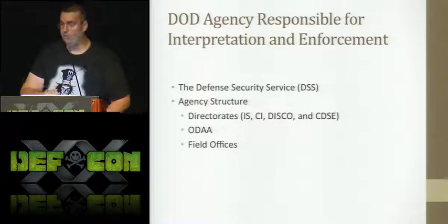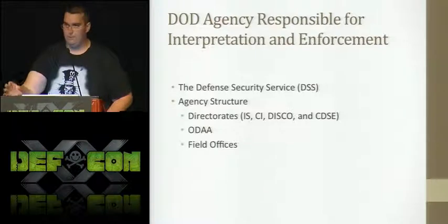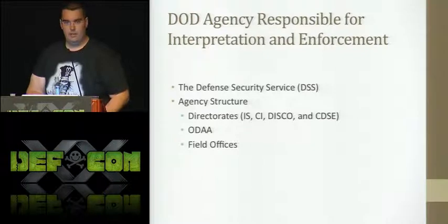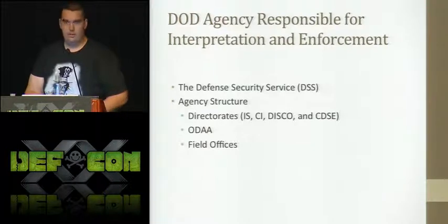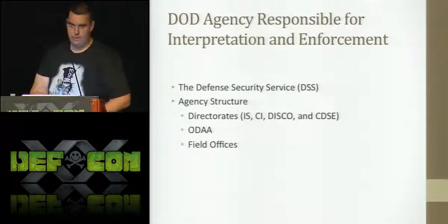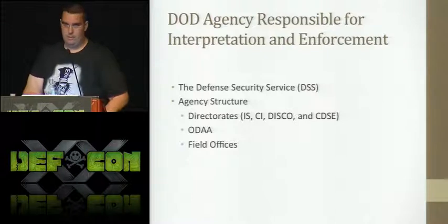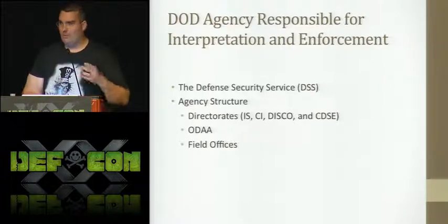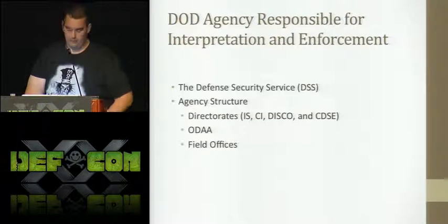Starting with the structure of the agency, there are four main directorates: IS (Industrial Security), CI (Counterintelligence), DISCO, and CDSE. If you've worked in the classified world and have a security clearance outside of government, you most likely got your clearance through DISCO. That's what most people know about DSS — that they did your background check — but that's only a small percentage of what they do.